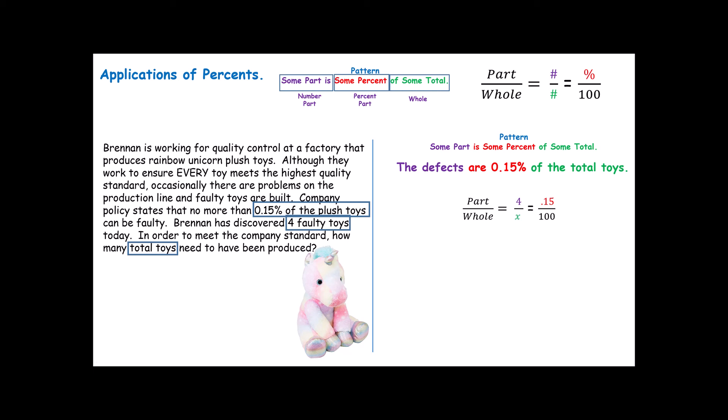Again, you've already done the hardest part. Cross multiply using the means extremes property. Four times 100, and then we divide both sides by .15, and we come up with 2,666.6 repeating toys. In other words, we have to produce at least 2,667 toys if we have four that are faulty. If more than four are faulty, or if we've produced fewer than this number of toys, then we have failed in meeting our quality control standards.